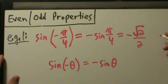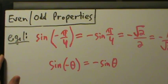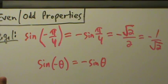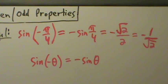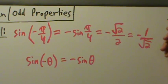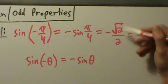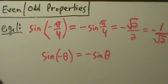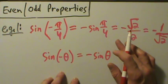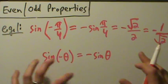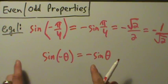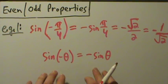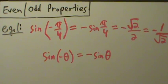You could also say negative 1 over root 2 — it doesn't really matter, it just depends on how you have to answer it. If you need to rationalize the denominator, you'd write it as negative root 2 over 2. It really is that simple using the even-odd property. Don't think of this as pulling out a minus sign or factoring — that's not what it is. It's just how odd functions work, and sine is an odd function.